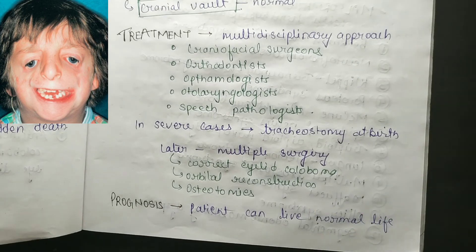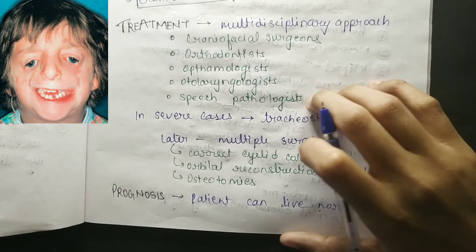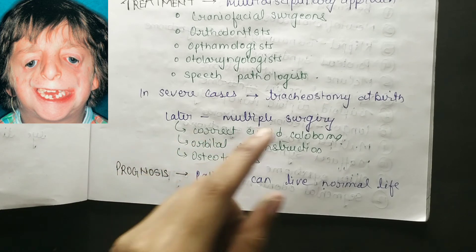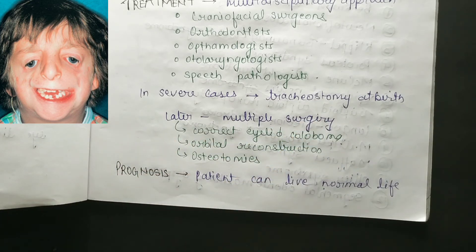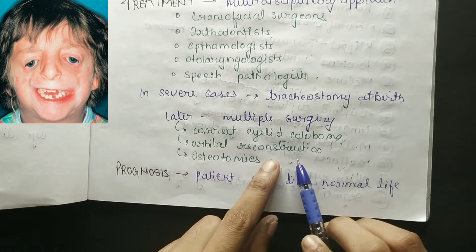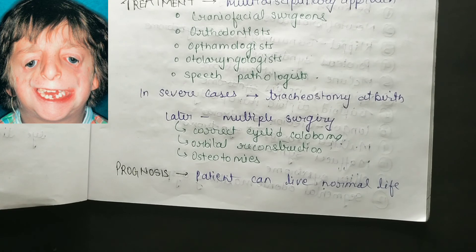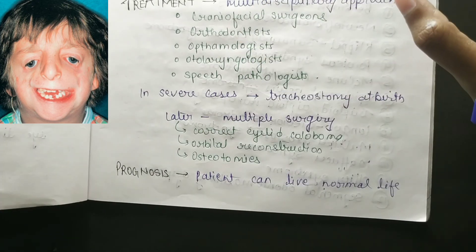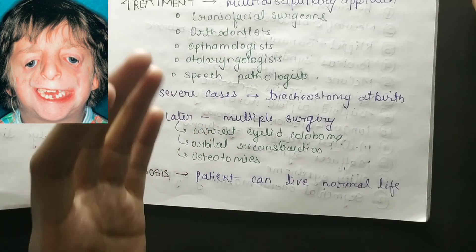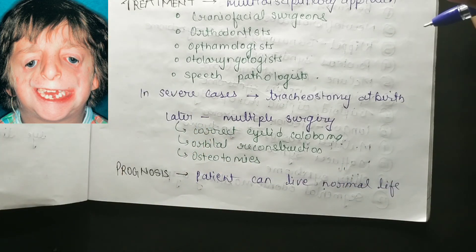In severe cases, tracheostomy at birth may be required, followed by multiple surgeries to correct eyelid coloboma, orbital reconstruction, and osteotomies. Regarding prognosis, symptoms are due to genetic or new mutation causes affecting facial development.